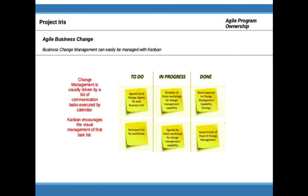Change management initiatives are typically driven from a plan that relies heavily on a list of communication tasks and events executed on a regular basis. Kanban encourages the use of a visual approach to working through that list of tasks. By having somebody with the responsibility to develop those task lists and flesh out what it means to perform each task, Kanban could be a very good tool to administer the business change tasks.